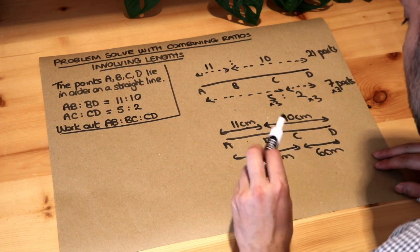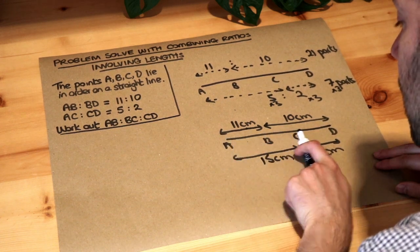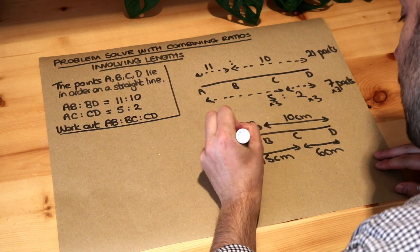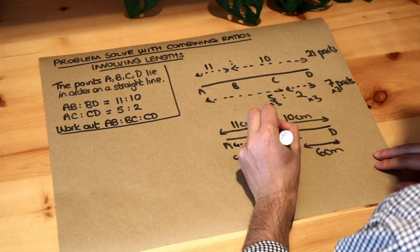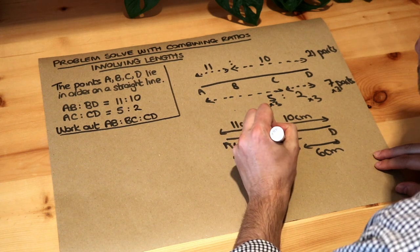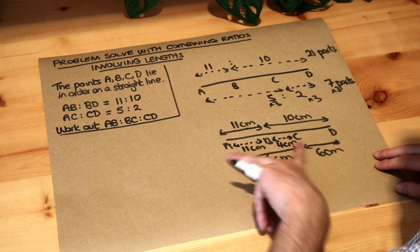Now let's use our common sense here. AC is 15 centimeters, but AB on its own is 11 centimeters. So if that is 11 centimeters here, that means BC must be 15 minus 11, which is 4 centimeters. That works: 11 plus 4 is 15. AC is 15.